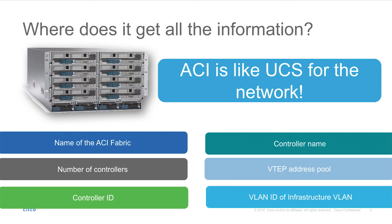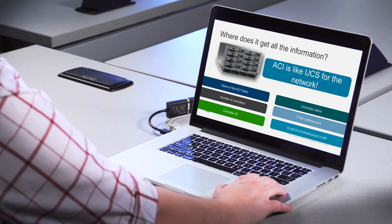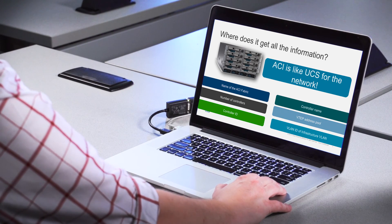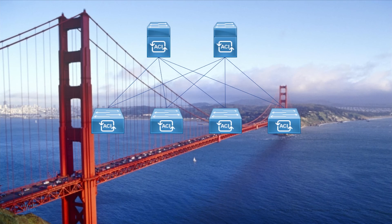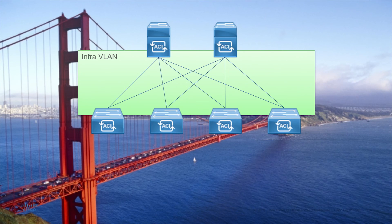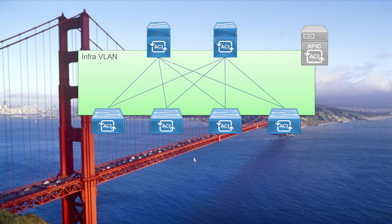Finally, it asks for the VLAN ID of the infrastructure VLAN. This might be new terminology, but it's nothing to be concerned about. The infrastructure VLAN is simply that space in the middle. The Cisco APIC communicates in the infrastructure VLAN in-band with the Cisco ACI spine and leaf nodes to distribute policies to the points of attachment — meaning the Cisco leaf — and provide a number of key administrative functions to Cisco ACI.